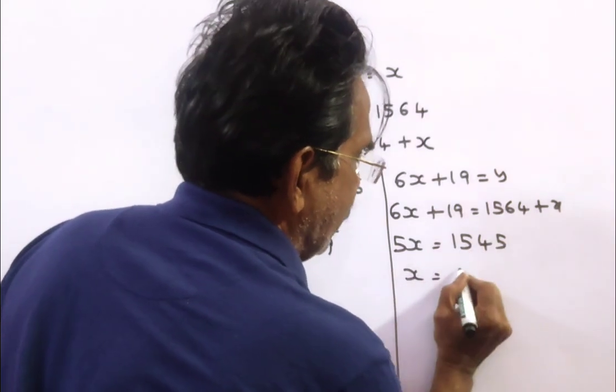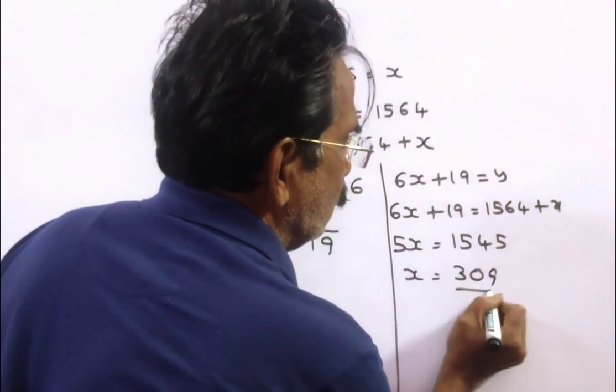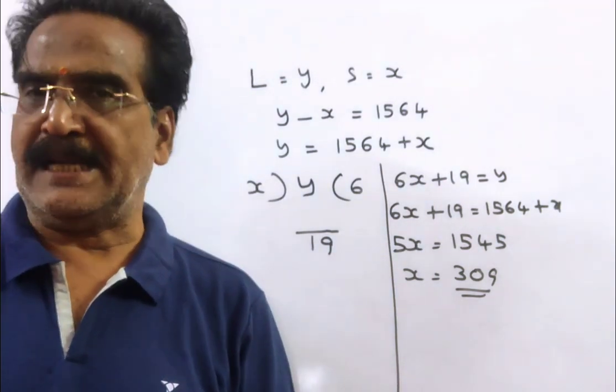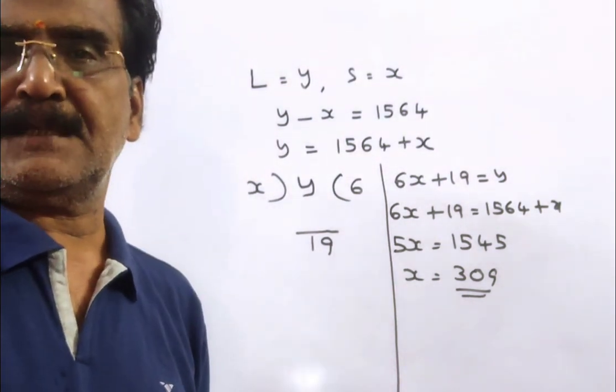So x is equal to 309. Friends, the smaller number is 309. Okay friends, thank you. Have a nice day.